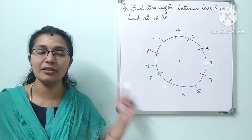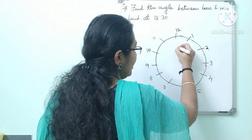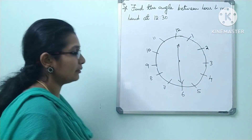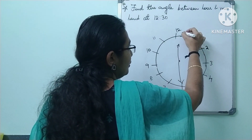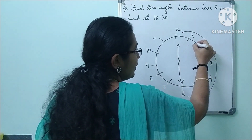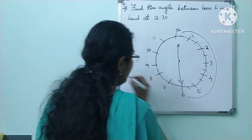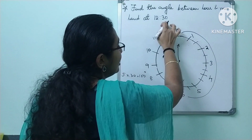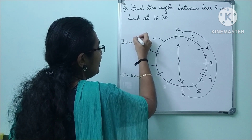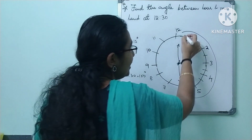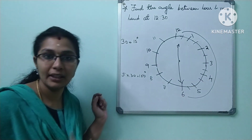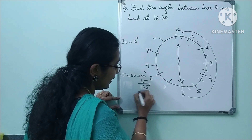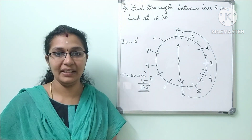Next question: time is 12:30. We count 5 complete sectors: 1, 2, 3, 4, 5 — that is 5 into 30 = 150 degrees. Plus 30 minutes means the hour hand has moved 15 more degrees. So 150 plus 15 = 165 degrees. The angle at 12:30 is 165 degrees.